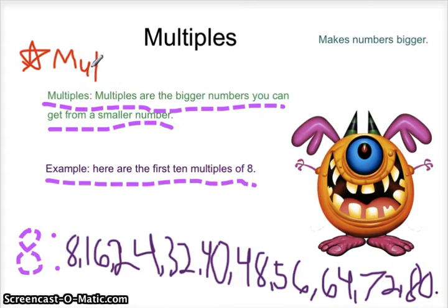And I know you're wondering what the monster is for. So the monster makes the numbers bigger. And so, that's why we have the monster, because the monster gets fatter and fatter every time he makes the number bigger. So that's why we have the monster there.